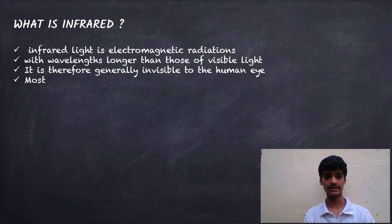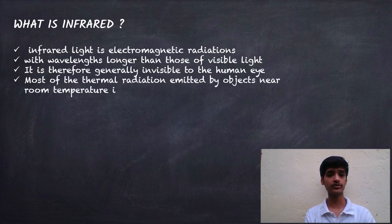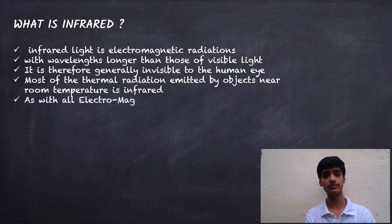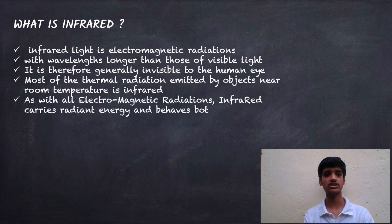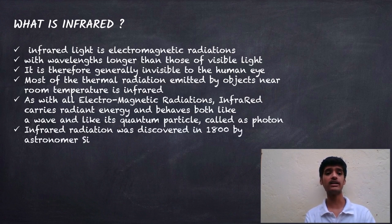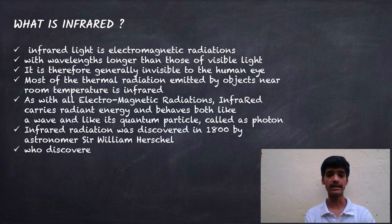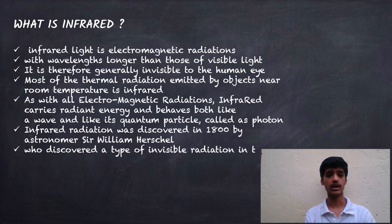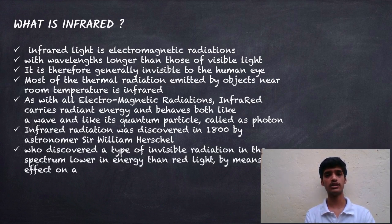You will be amazed to hear this: most of the thermal radiation emitted by objects near room temperature is infrared radiation. As with all electromagnetic radiation, infrared carries radiant energy and behaves both like a wave and like its quantum particle called a photon. Infrared radiation was discovered in 1800 by astronomer Sir William Herschel.